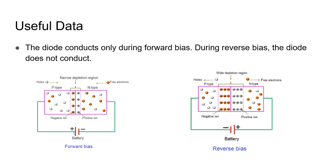When it is forward biased, the positive terminal is connected to the P side and the negative to the N side. During forward bias, when electrons are pumped via these terminals, more and more electrons accumulate into the P type material and recombine with the holes already present. Similarly, in the N material side, holes recombine with the electrons in the N type material, reducing the depletion region's width and allowing current flow.